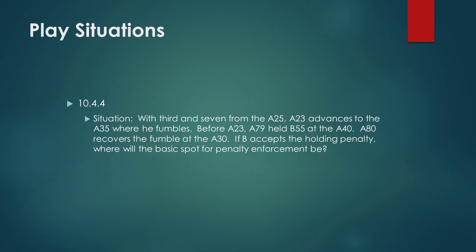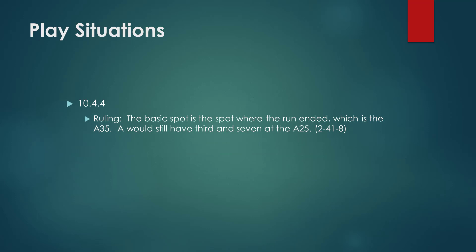Situation 10-4-4: 3rd and 7 from the A-25. A-23 advances to the A-35 where he fumbles. Before the fumble, A-79 held B-55 at the A-40. A-80 recovers the fumble at the A-30. If B accepts the holding penalty, the basic spot is the spot where the run ended — the A-35 — and Team A would still have 3rd and 7 at the A-25, bringing in 2-41-8. Understand enforcement spots as they relate to running plays, loose ball plays, kicking plays, and post-scrimmage kick. Many factors and variables make it challenging, but understanding basic spots as they relate to penalty enforcement is the key.